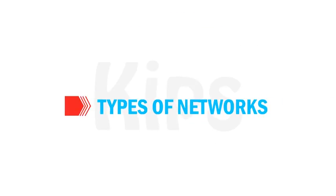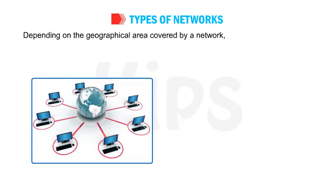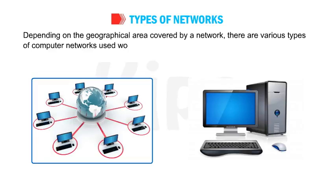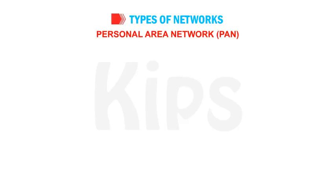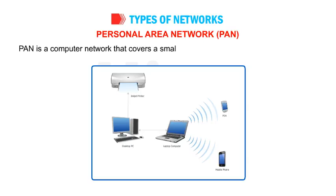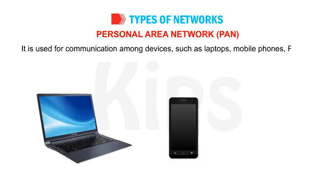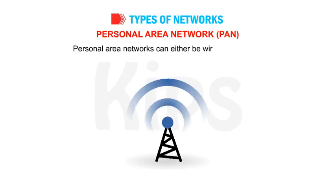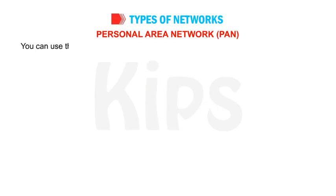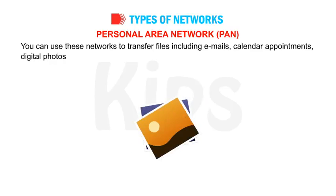Let us talk about the types of networks. Depending on the geographical area covered by a network, there are various types of computer networks used worldwide. Personal Area Network (PAN): PAN is a computer network that covers a small area of about 10 meters (about 30 feet). It is used for communication among devices such as laptops, mobile phones, PDAs or smartphones. Personal Area Networks can be wired or wireless, and you can use them to transfer files including emails, calendar appointments, digital photos and music.